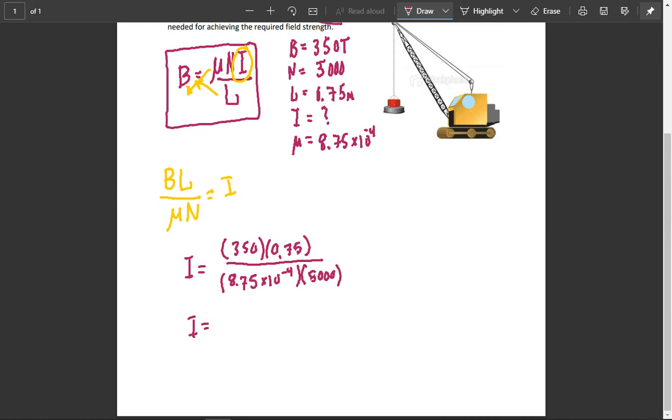So the required current in this case—since it's all just multiplication and division, I do 350 times 0.75, and I divide it by 8.75, and I hit my EXP button, or times 10 to the power of button.